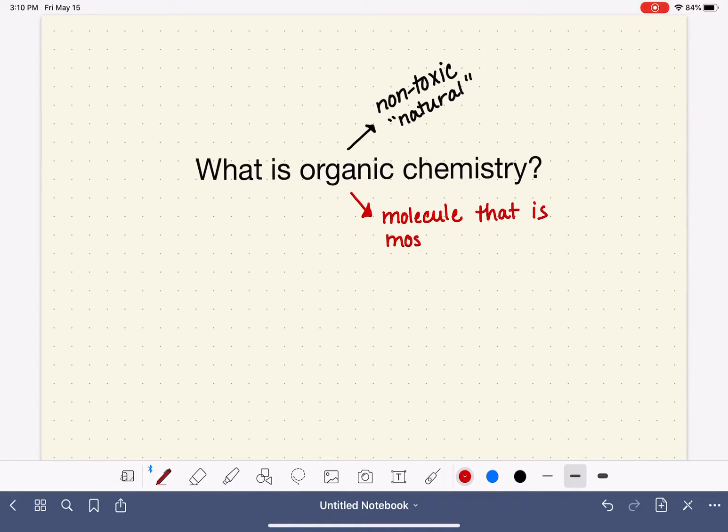It's mostly carbons and hydrogens. Not exclusively carbons and hydrogens, but the majority of the atoms in this molecule are carbons and hydrogens. So a molecule that is mostly carbons and hydrogens can be called an organic molecule. We also call it a hydrocarbon.